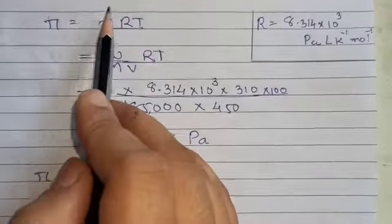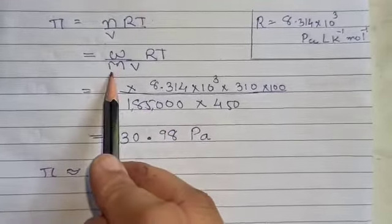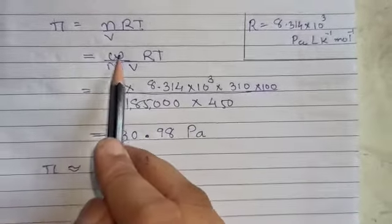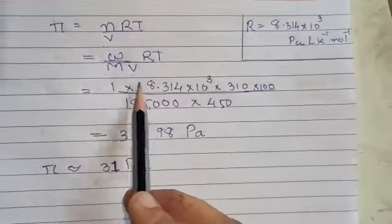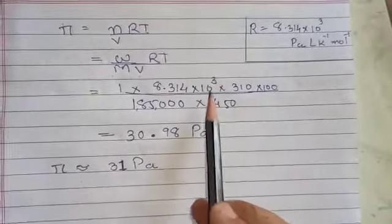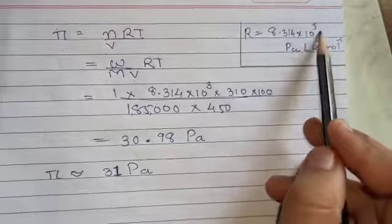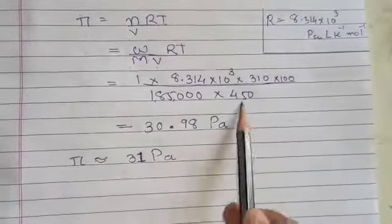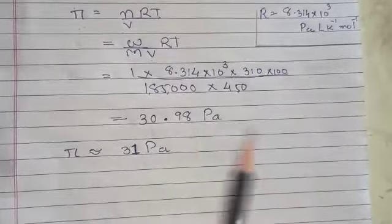Using the formula π = nRT/V, where n = mass / molar mass, we substitute to get π = WRT / (M × V). Replacing all values with R = 8.314 × 10³ Pa·L/(Kelvin·mol), we get the answer: π = 30.98 pascals, which is approximately 31 pascals.